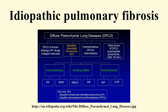Idiopathic pulmonary fibrosis is a chronic and ultimately fatal disease characterized by a progressive decline in lung function. The term pulmonary fibrosis means scarring of lung tissue and is the cause of worsening dyspnea. Fibrosis is usually associated with a poor prognosis.